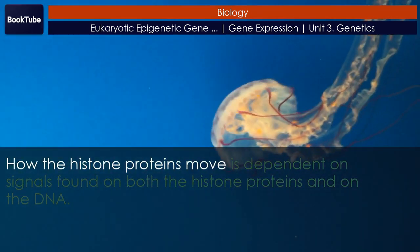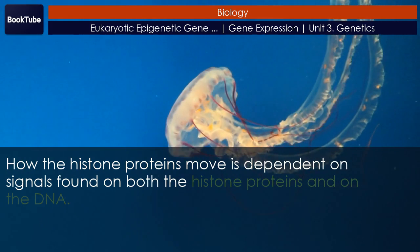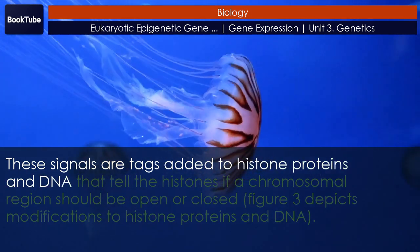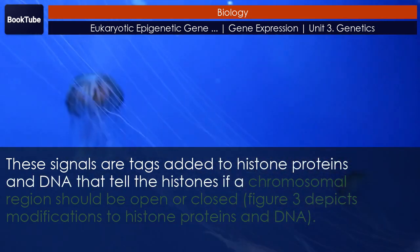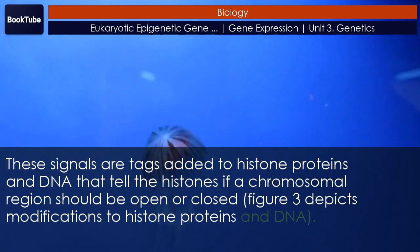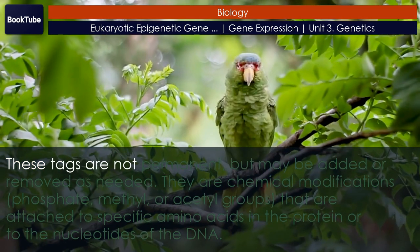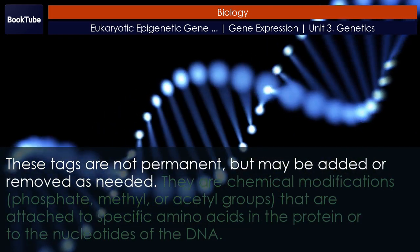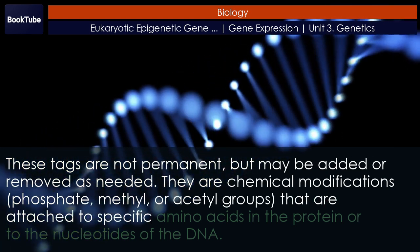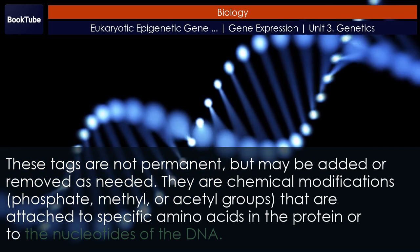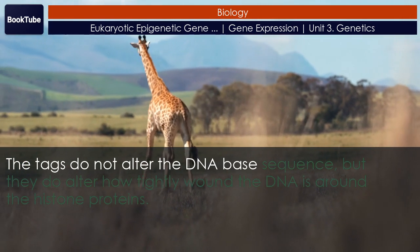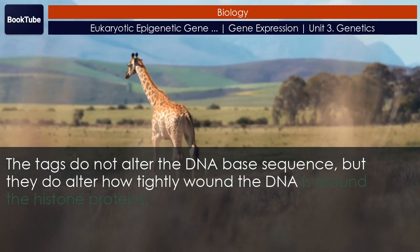How the histone proteins move is dependent on signals found on both the histone proteins and on the DNA. These signals are tags added to histone proteins and DNA that tell the histones if a chromosome region should be open or closed. These tags are not permanent, but may be added or removed as needed. They are chemical modifications — phosphate, methyl, or acetyl groups — that are attached to specific amino acids in the protein or to the nucleotides of the DNA. The tags do not alter the DNA base sequence, but they do alter how tightly wound the DNA is around the histone proteins.